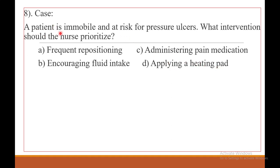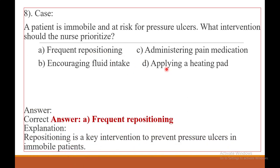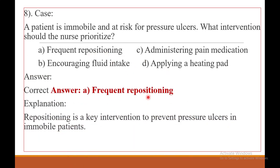Question number eight. The patient is immobile and at risk for pressure ulcers. What intervention is the priority? The answer for this question is A — frequent repositioning. Repositioning is a key intervention to prevent pressure ulcers in an immobile patient.